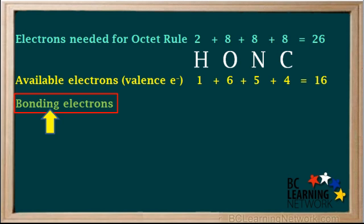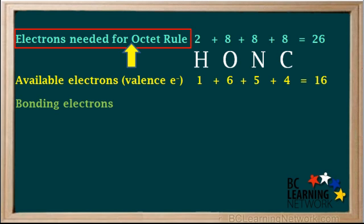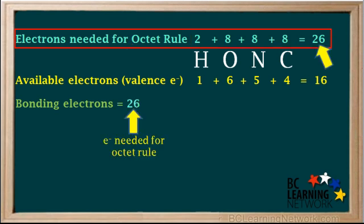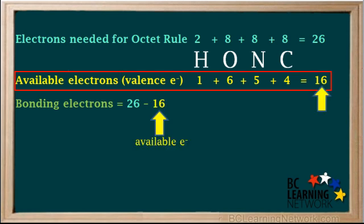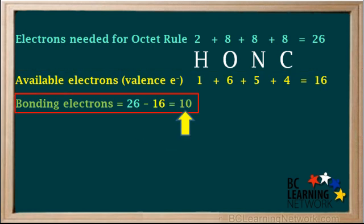We'll need two electrons to give hydrogen the stable configuration of helium, and 8 each for oxygen, nitrogen, and carbon to give them stable octets, which comes to a total of 26 electrons needed. Now we'll find the number of bonding electrons. We take the total electrons needed, which is 26, and subtract the number of available electrons, which is 16. So the number of bonding electrons is 26 minus 16, which equals 10.